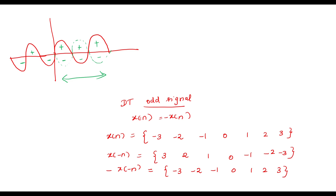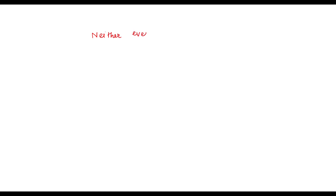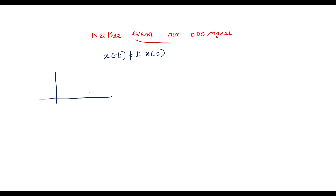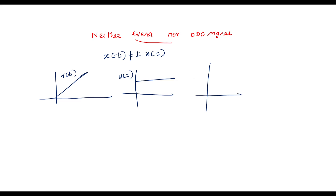Next, I am going to explain neither even nor odd signal. It does not satisfy the relation x of minus t equal to plus or minus x of t — it is a combination of both. See the examples: the ramp signal, where the signal is available in one quadrant only, is a neither even nor odd signal. Also u of t, the unit step signal, and e to the power minus t are neither even nor odd signals.